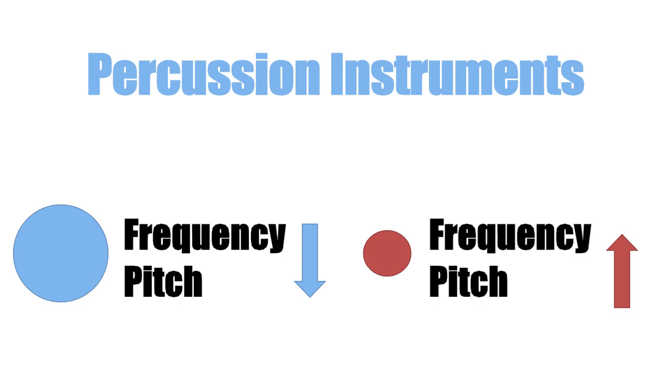When the area of the vellum is larger, the frequency gets low and it will produce a low sound. When the area of the vellum gets smaller, the frequency gets high and it will produce a high sound. Let's go for a demonstration.